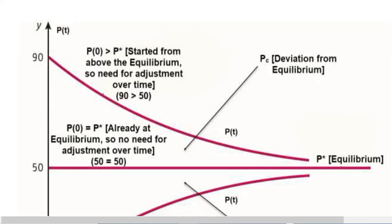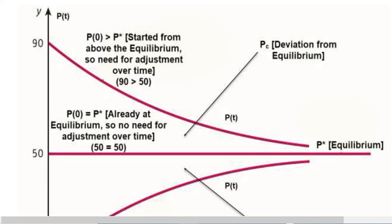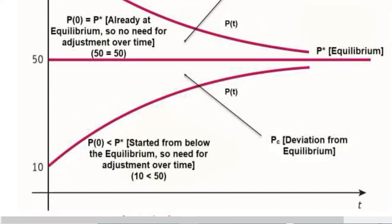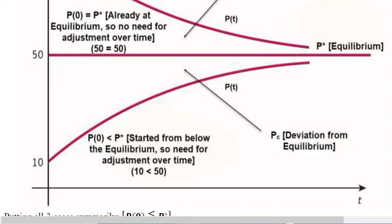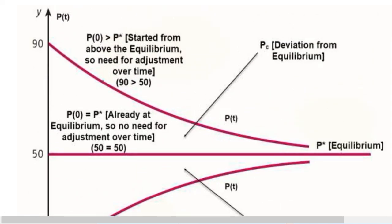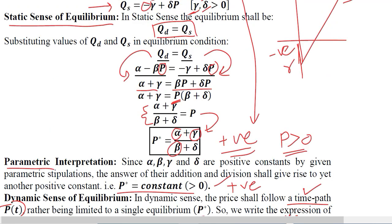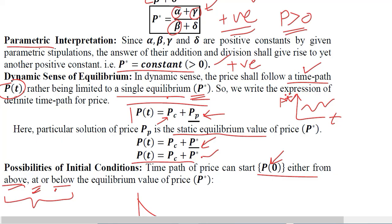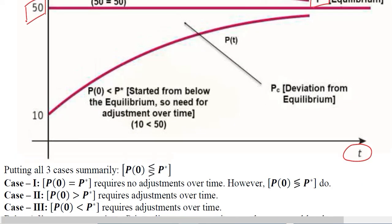This is a detailed diagram of what we just discussed. On the x-axis we have the time variable, which makes sense because it is a time-based dynamic analysis, and on the y-axis we have P(t), the time path of price. The equilibrium P* is the notation, and we are assuming that equilibrium occurs at price 50. It is a constant positive value, as the formula we developed showed there would be a constant positive answer, and here it is 50.